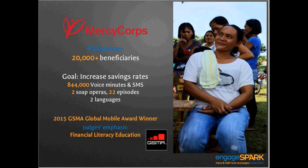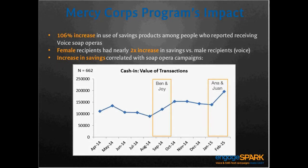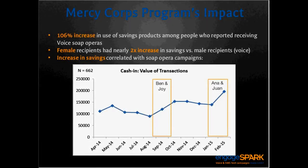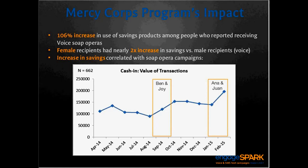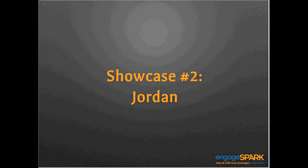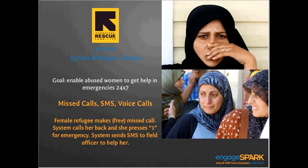The program had real impact — a 106% increase in the use of savings products among people who received the voice soap operas. The storyline went so well they did another one around a couple Anna and Juan, and you can see real savings rates spiking during both the Ben and Joy and Anna and Juan storylines as people put cash into their bank accounts.